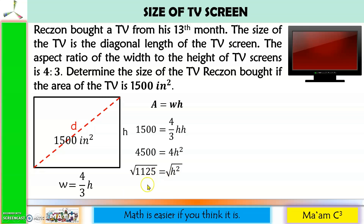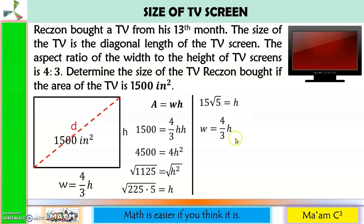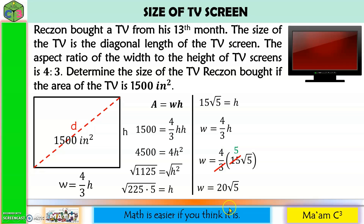Taking the square root of both sides to solve for H: 1,125 can be expressed as 225 times 5. The index 2 and exponent 2 cancel out, giving H. The square root of 225 is 15, so H equals 15 square root of 5. Now using the working formula for W and substituting 15 square root of 5 for H: this gives 4 thirds times 15 square root of 5. Since 15 divided by 3 is 5, and 5 times 4 is 20, W equals 20 square root of 5.